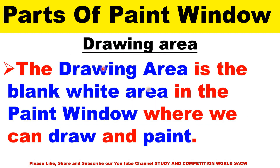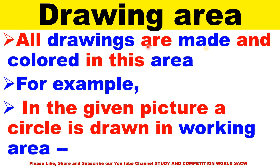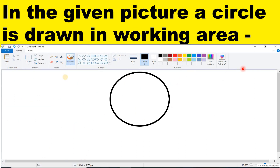Drawing area. The drawing area is the blank white area in the paint window where we can draw and paint. All the drawings are made and colored in this area. For example, a circle is drawn in the working area. If you want to make a circle, you select it from the shape tool and make the drawing here. It is also called canvas.